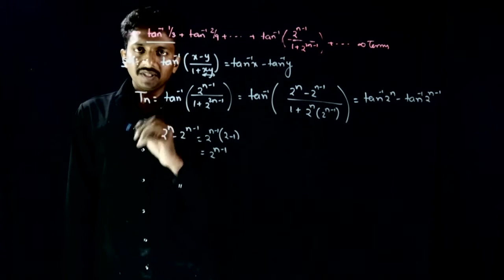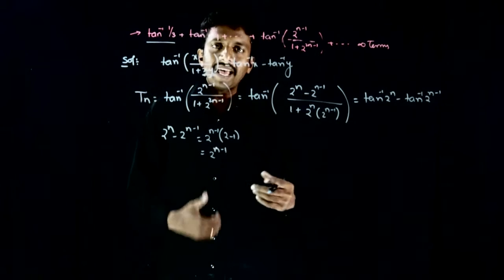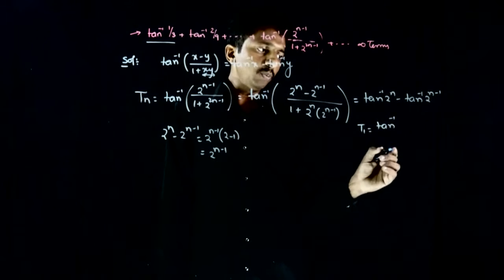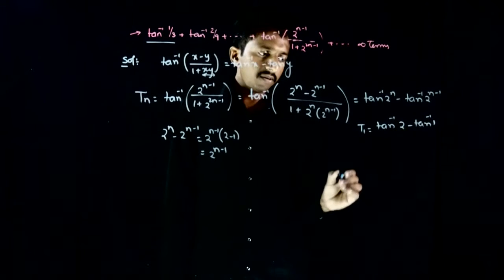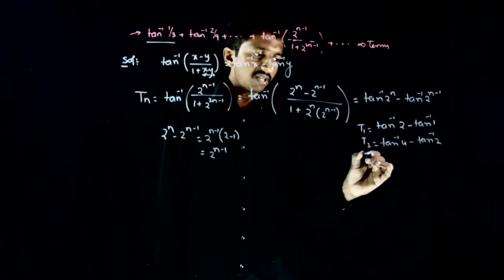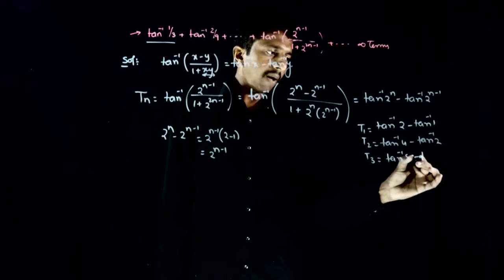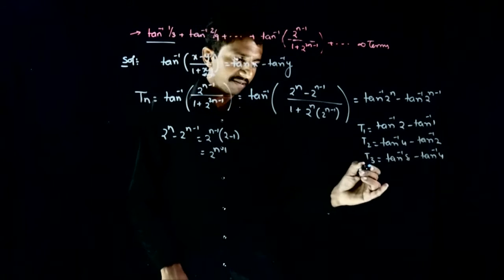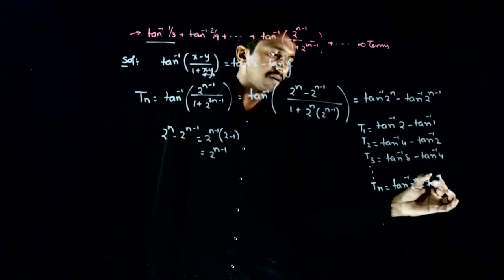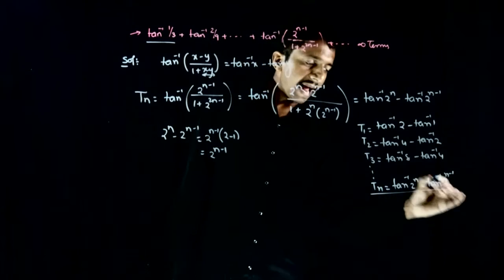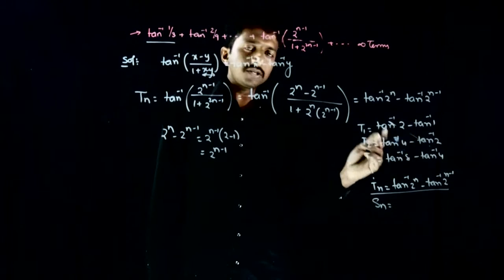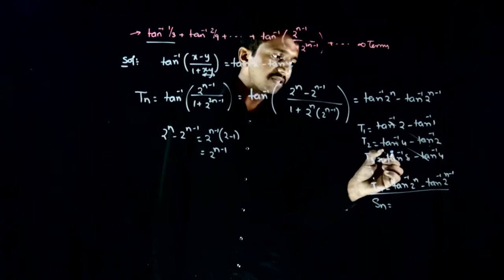So this is my nth general term. Let us add the sequence up to n terms. t₁ = tan inverse of 2 minus tan inverse of 1. t₂ = tan inverse of 4 minus tan inverse of 2. t₃ = tan inverse of 8 minus tan inverse of 4. The nth term is tan inverse of 2^n minus tan inverse of 2^(n-1). If I add all these terms, do you see some cancellation going on? Plus tan inverse 2 minus tan inverse 2, plus tan inverse 4 minus tan inverse 4, and so on — the cancellation is happening.